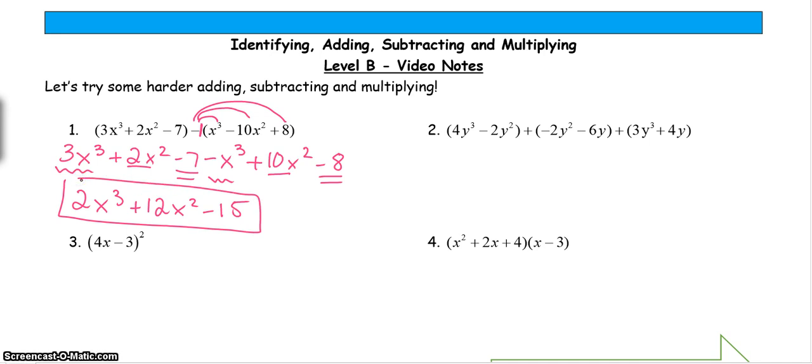All right, for this next one, I have three parentheses, but it's still the same type of problem where I'm looking for like terms. Since both of my signs are addition, I don't need to distribute anything here. So I've got 4y³ and 3y³, so that gives me 7y³.